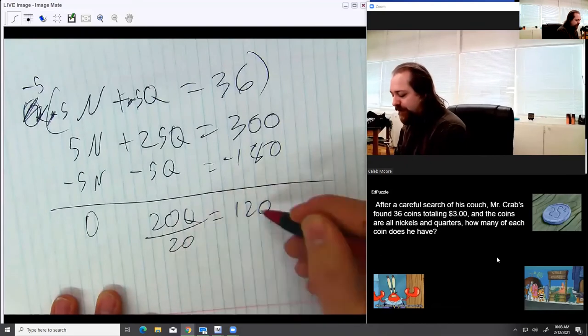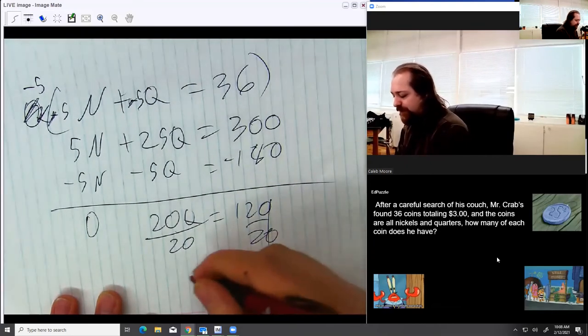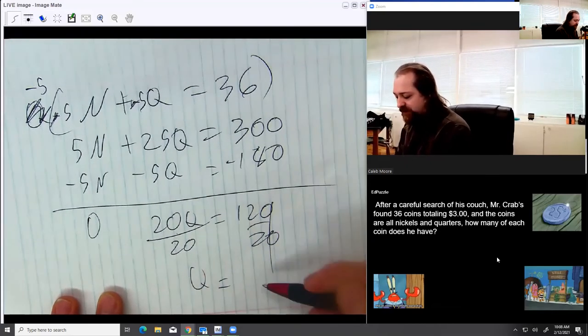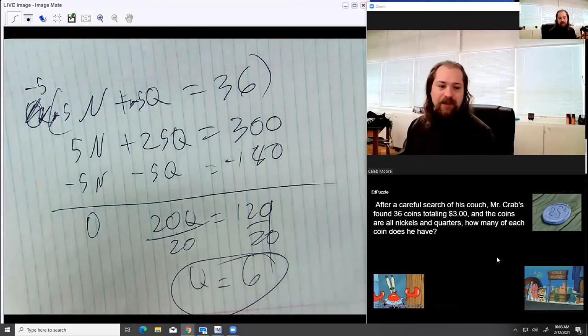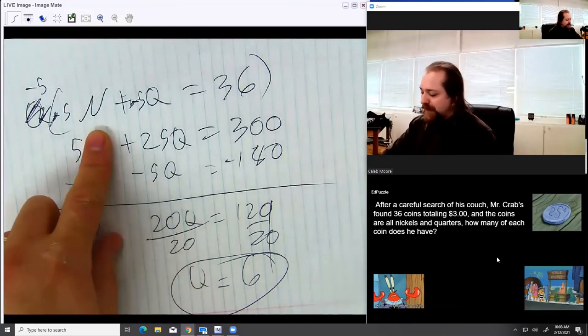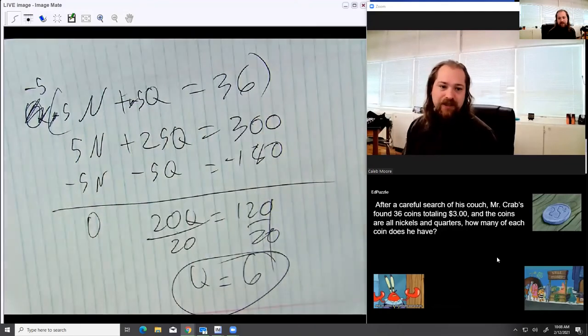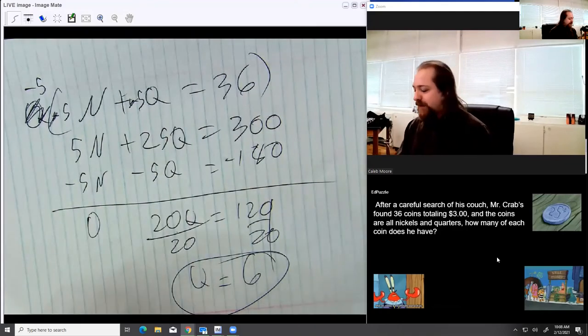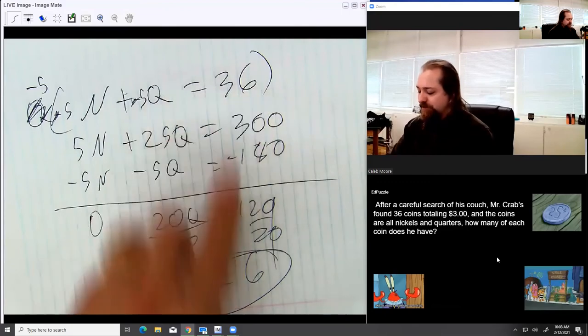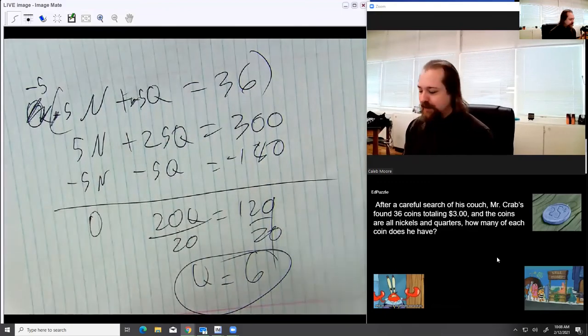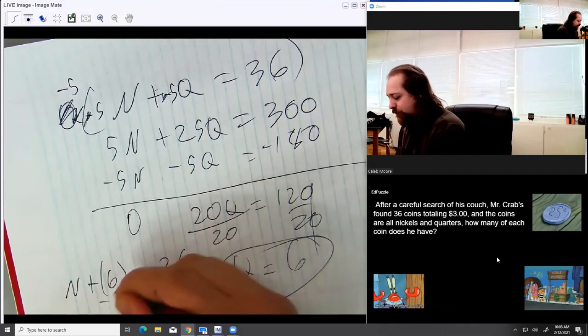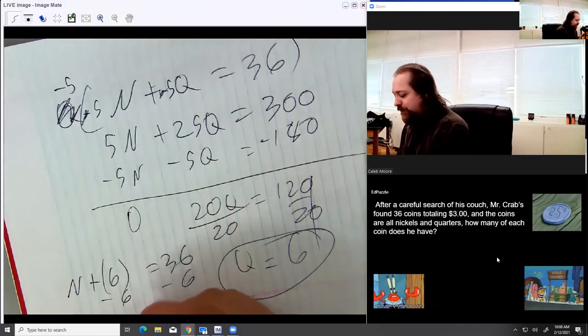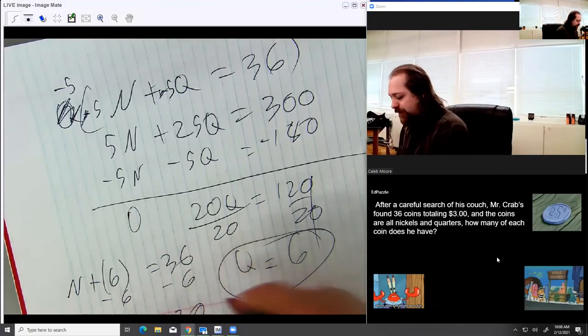Now simple math. I divide by 20. Zeros cancel out, leaving me q equals 12 divided by 2 is 6. q is 6. Now I need to find the nickels. Now remember, if I combine the amount of nickels and the amount of quarters, I get 36 coins. So that means that if the quarters are 6, there's going to only be 30 coins left that have to be nickels. N plus 6 equals 36. Subtract 6. But obviously, you guys knew it's equal to 30.